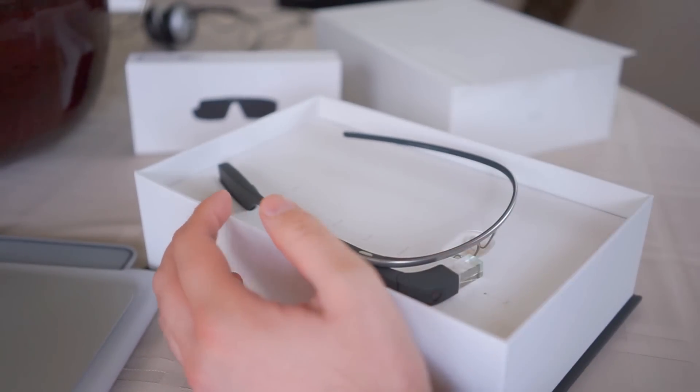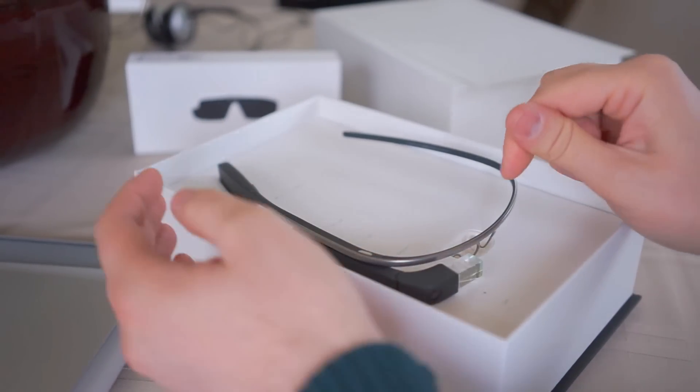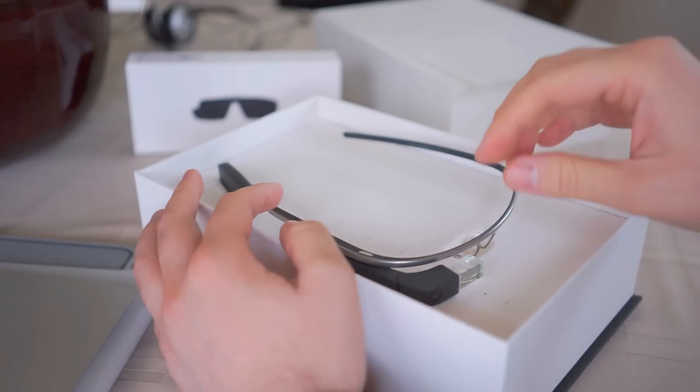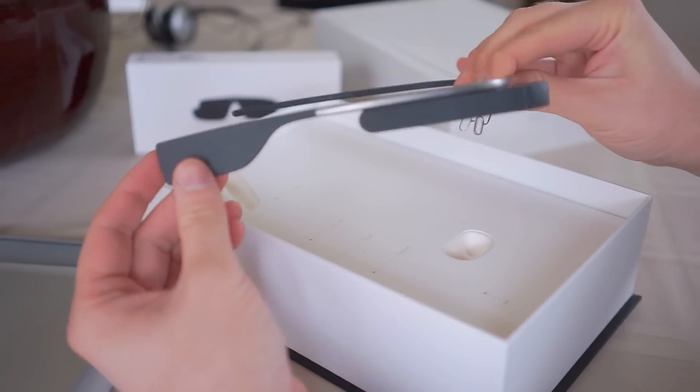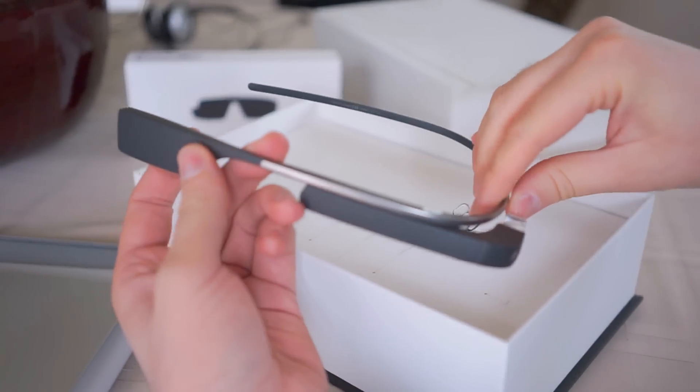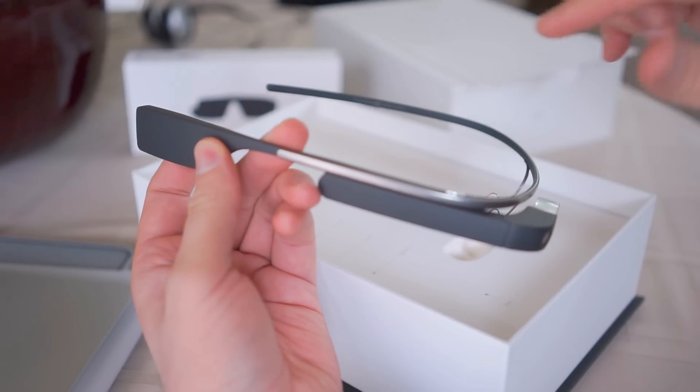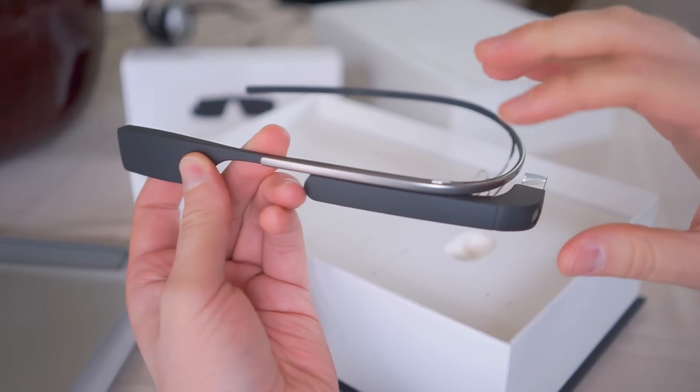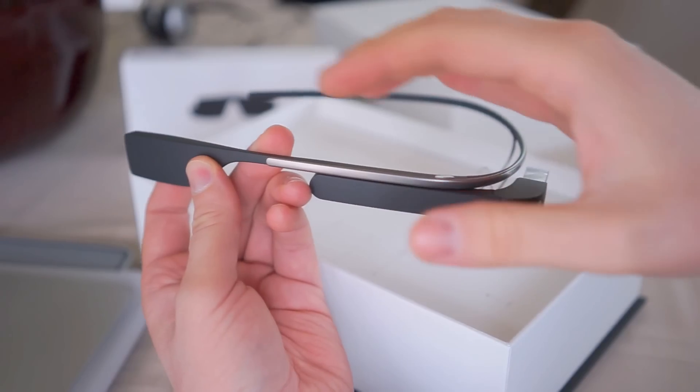And Google gave people the option of changing the color of the glass. So, I was originally Team Shale, which was the taupe color. It was more of a brownish, and I liked that one because I felt like it was more incognito. It blended in better with my face and my hair, so it didn't stand out as much as,